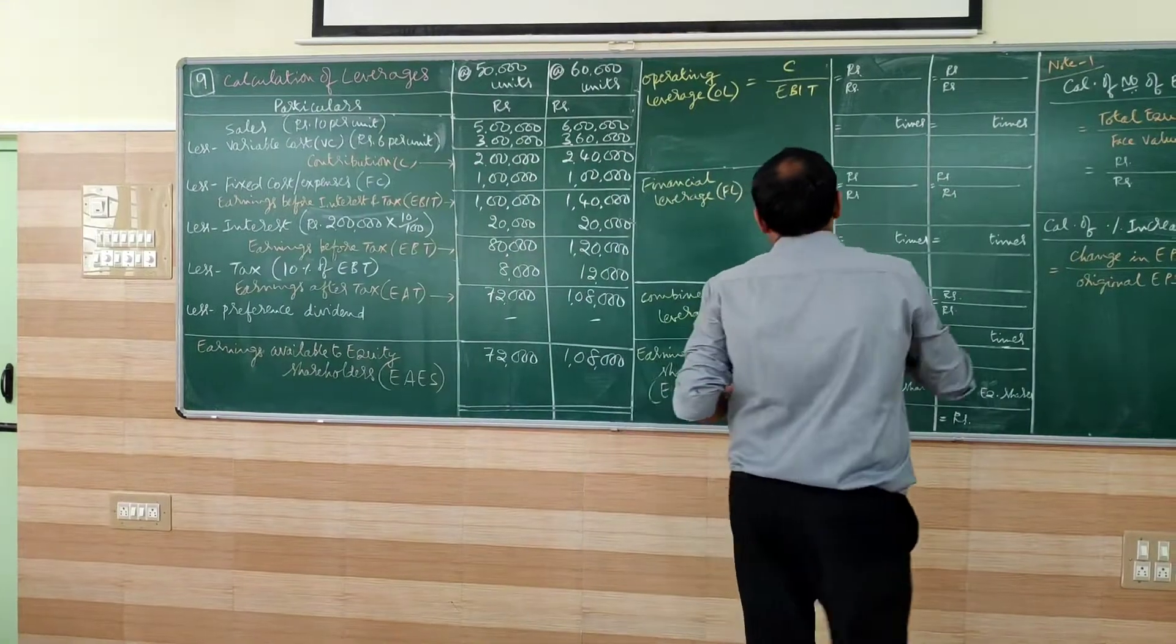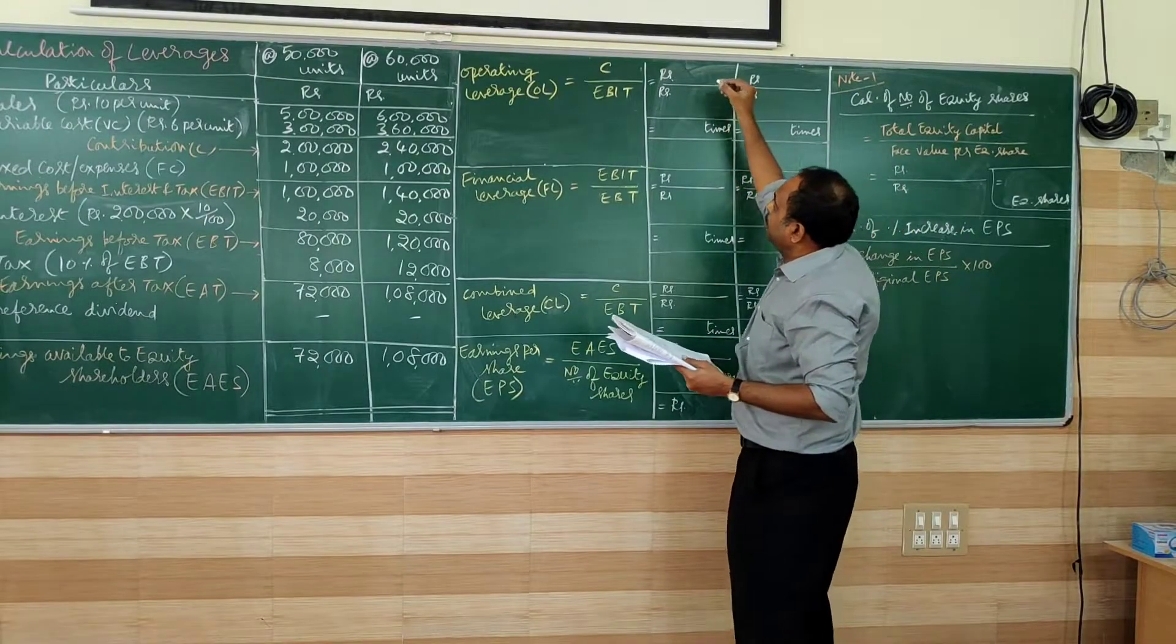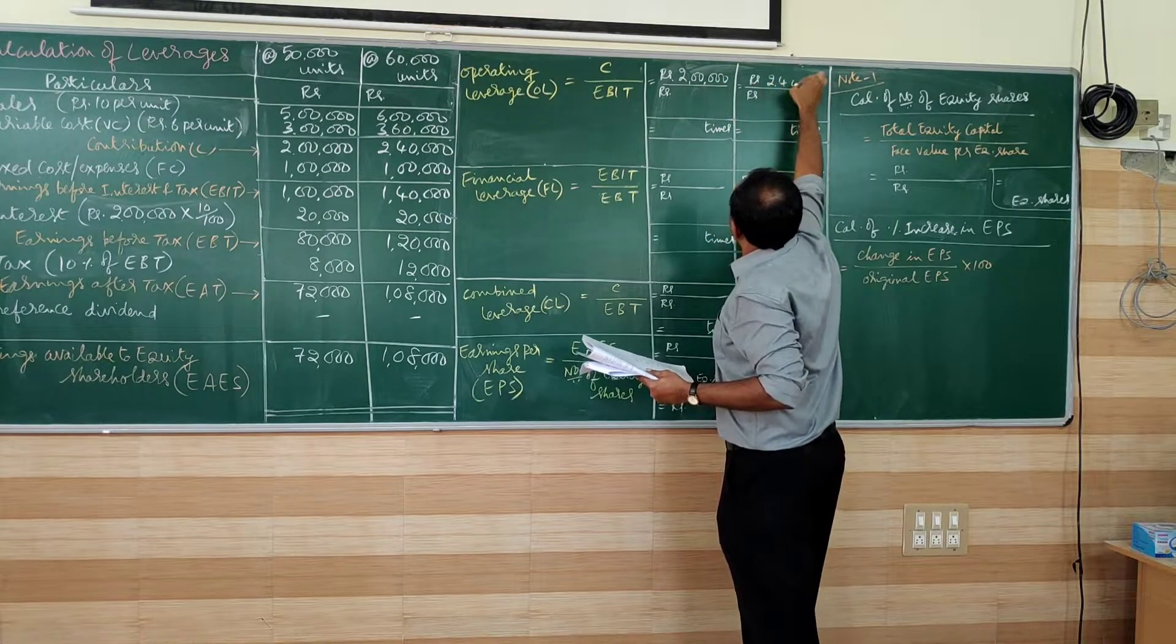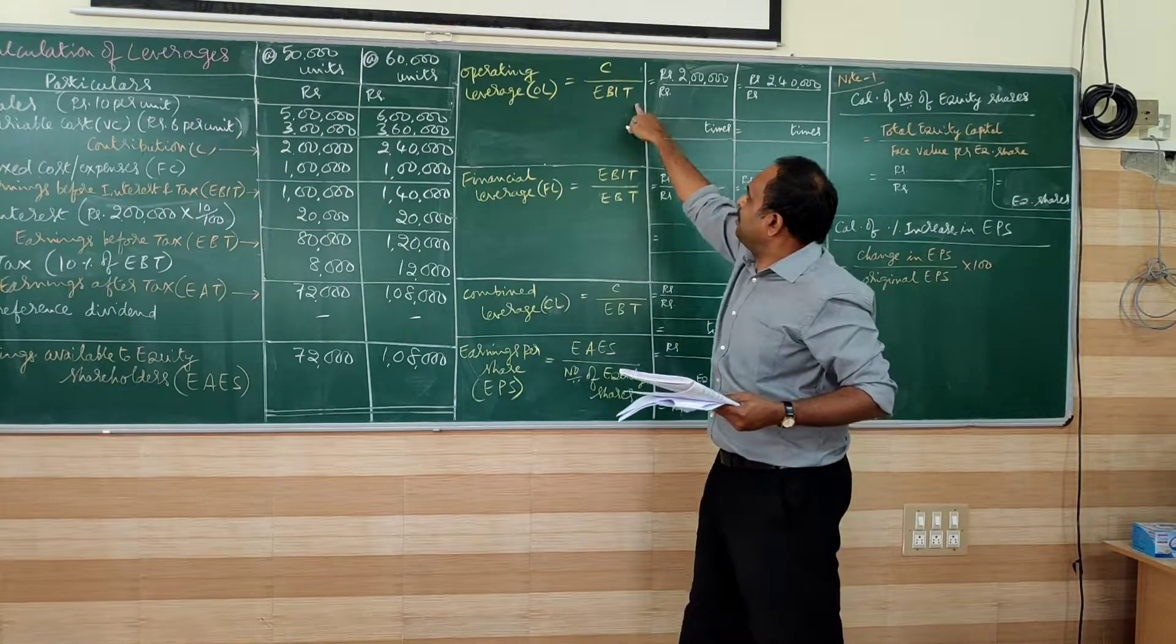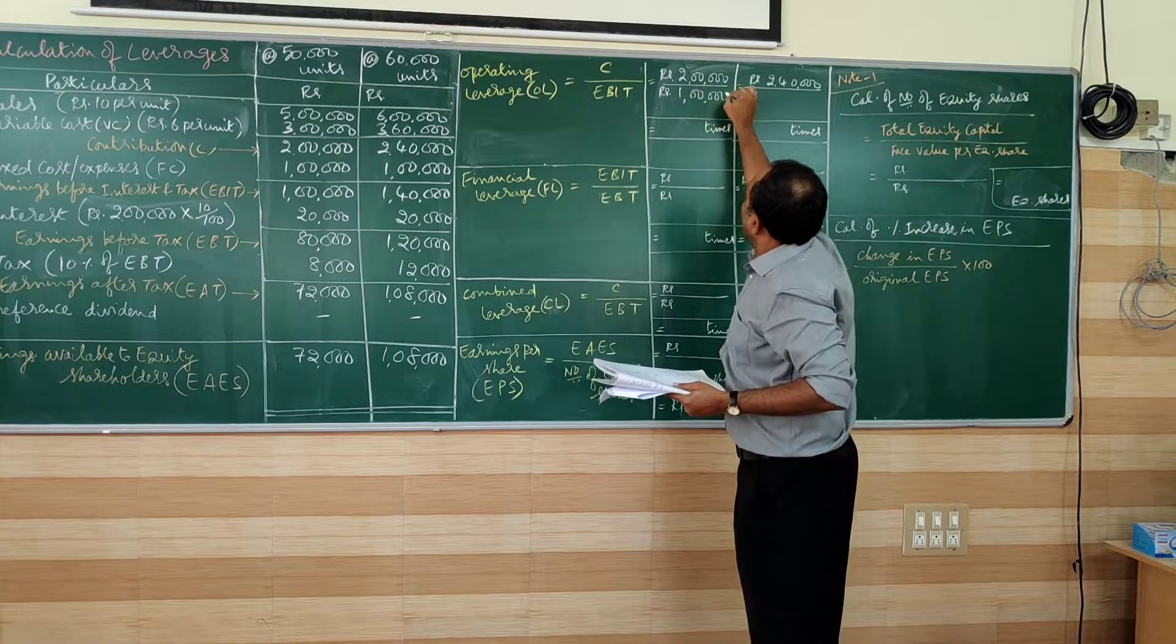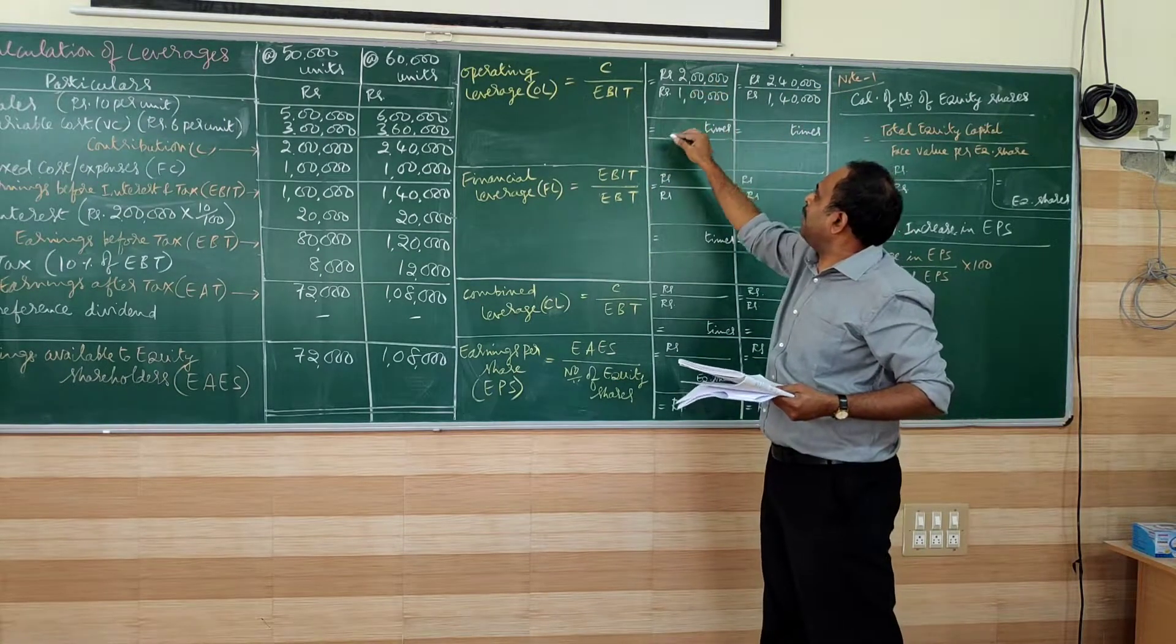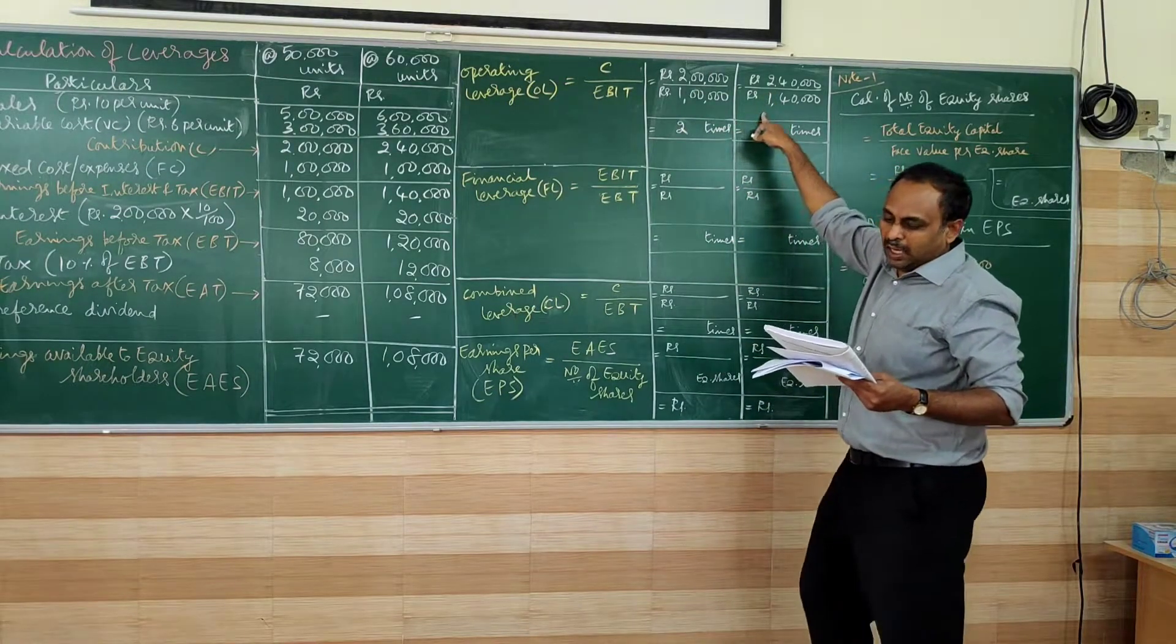Coming to the operating leverage, same columns I am continuing here. Contribution: 2 lakhs for first situation, 2 lakh 40 for second situation. EBIT: first situation 1 lakh, second situation 1 lakh 40,000. So if you divide 2 lakh by 1 lakh, 2 times. 2 lakh 40 by 1 lakh 40 equals 1.714 times.